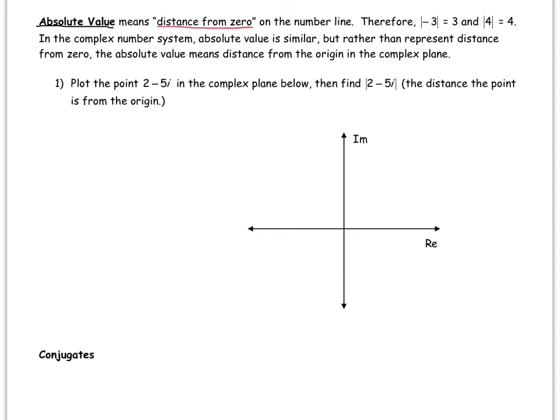In the complex number system we're going to use the same sort of definition—it's a measurement of distance. But since in the complex plane we have both the real axis and the imaginary axis, the distance from zero doesn't quite make sense. We're going to say the distance from the origin (0,0) or 0 + 0i, which would be the origin in the complex plane. In this example we'll find the absolute value of 2 minus 5i.